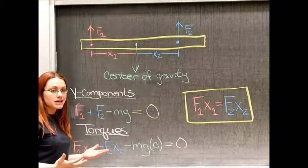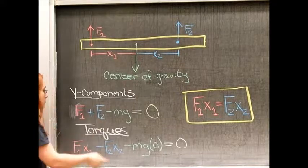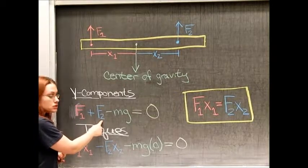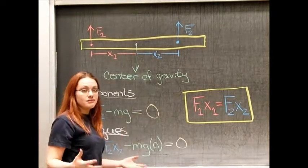So, if we do our free body diagram and look at all of the forces in the y component, we know that the force applied by finger one plus the force applied by finger two minus the force of gravity must equal zero, because again, our object is not moving.